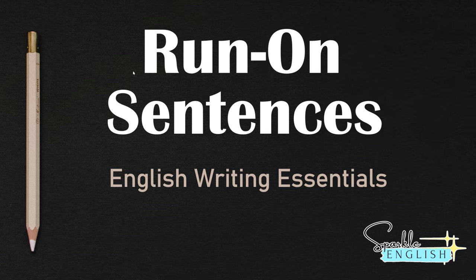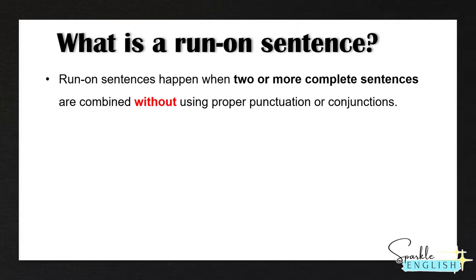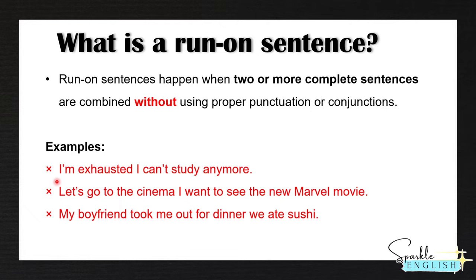So what is a run-on sentence? Run-on sentences happen when two or more complete sentences are combined without using proper punctuation or conjunctions. For example: I'm exhausted, I can't study anymore. Let's go to the cinema, I want to see the new Marvel movie. My boyfriend took me out for dinner, we ate sushi. All three of these sentences are run-on sentences. They are incorrect. We need to use proper punctuation or conjunctions to fix these sentences.